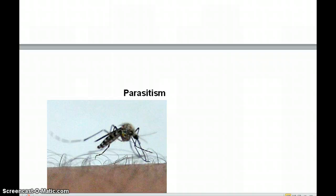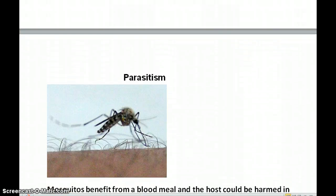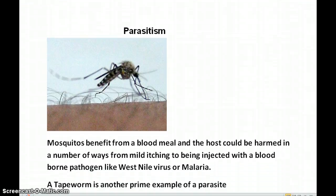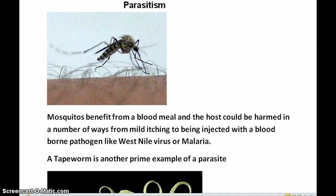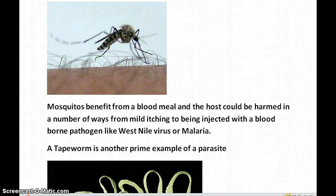A second example of symbiotic relationship is parasitism. In any parasite relationship, the parasite itself benefits and the host is harmed — in some cases it could even be killed. Mosquitoes get a blood meal from the host, predominantly warm-blooded animals, and can harm their host in various ways: mild itching from chemicals released to prevent clotting, or they could inject a blood-borne pathogen like West Nile virus or malaria.